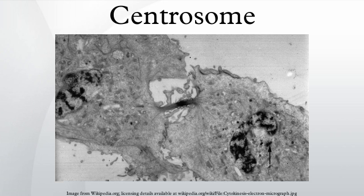Research in 2006 indicated that centrosomes from surf clam eggs contain RNA sequences. The sequences identified were found in few to no other places in the cell, and do not appear in existing genome databases. One identified RNA sequence contains a putative RNA polymerase, leading to the hypothesis of an RNA-based genome within the centrosome. However, subsequent research has shown that centrosomes do not contain their own DNA-based genomes. While it was confirmed that RNA molecules associate with centrosomes, the sequences have still been found within the nucleus. Furthermore, centrosomes can form de novo after having been removed from normal cells.